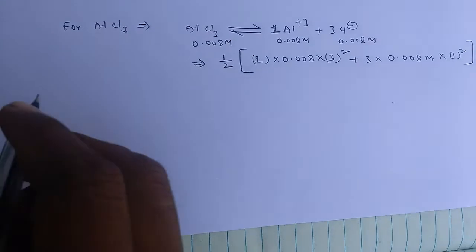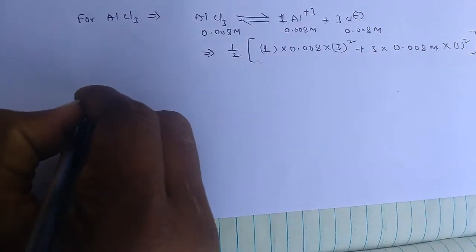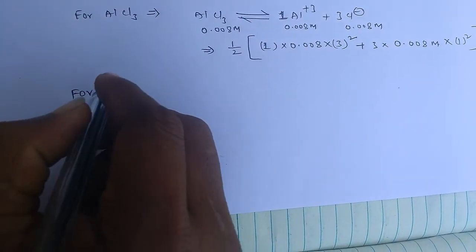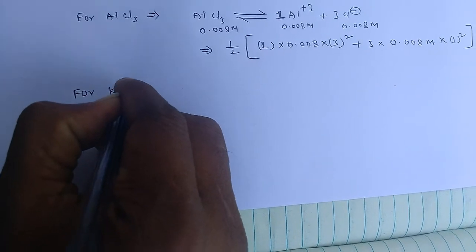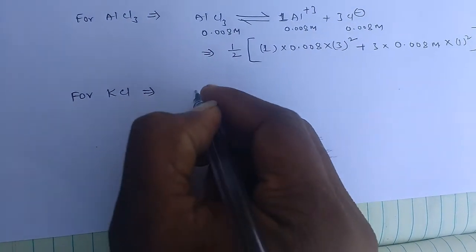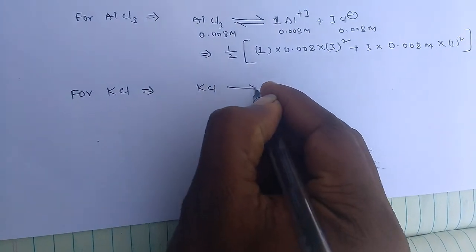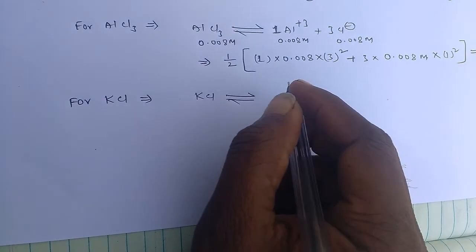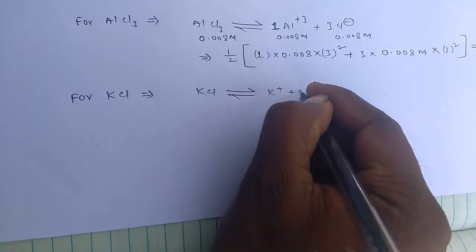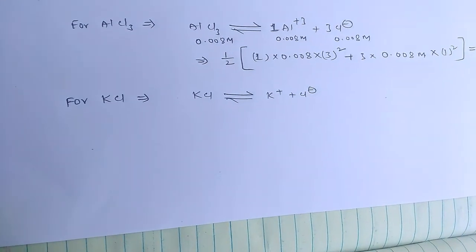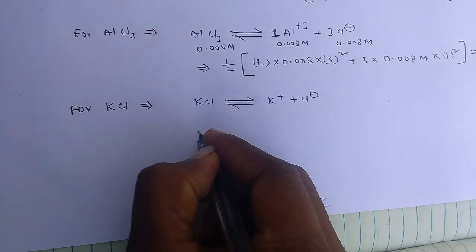And if you calculate ionic strength for KCl, potassium chloride, in its aqueous solution it has K⁺ and Cl⁻ ions. If you apply the formula: